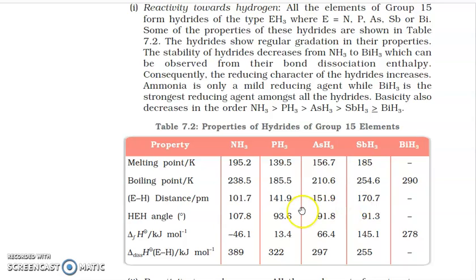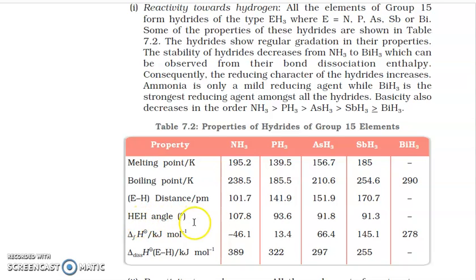As bond length increases, the delta H of dissociation decreases — meaning less energy is required to break the bond. Next comes E-H angle, i.e., bond angle. On going down the group, bond angle decreases.